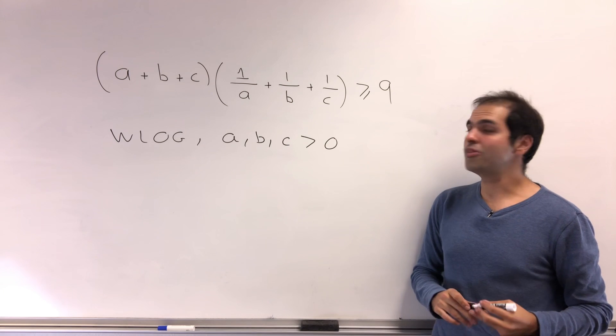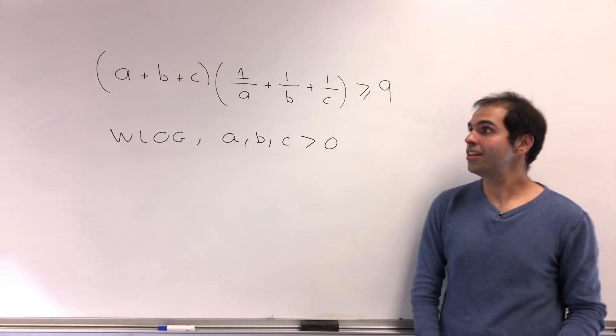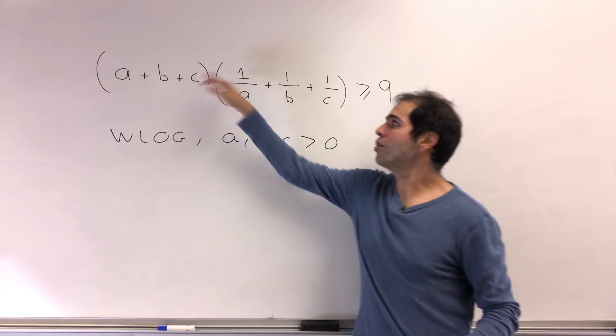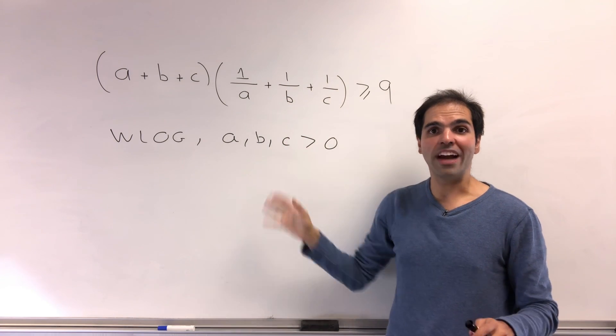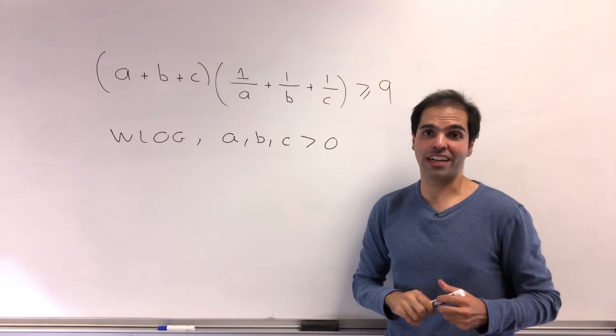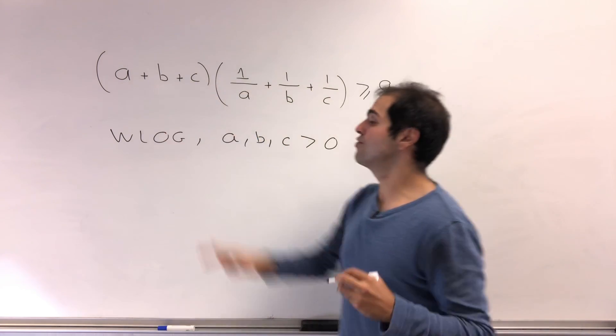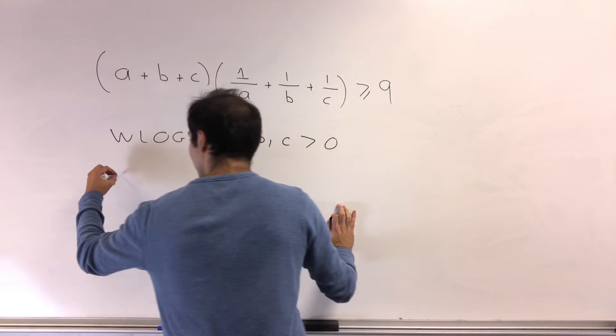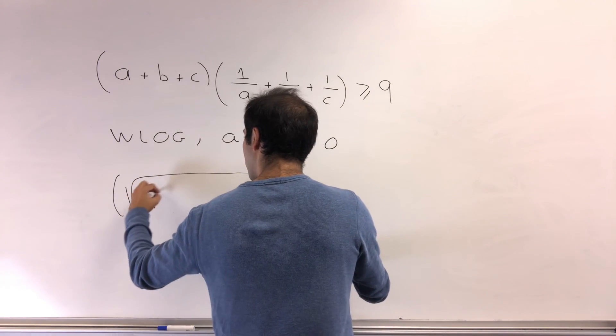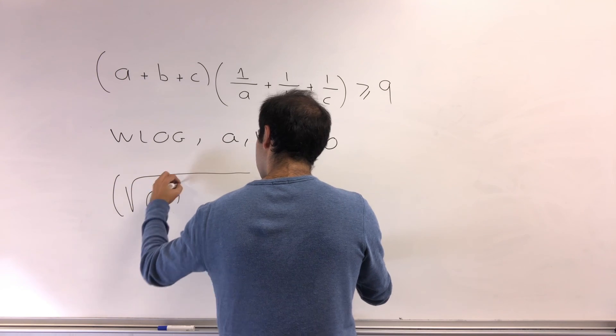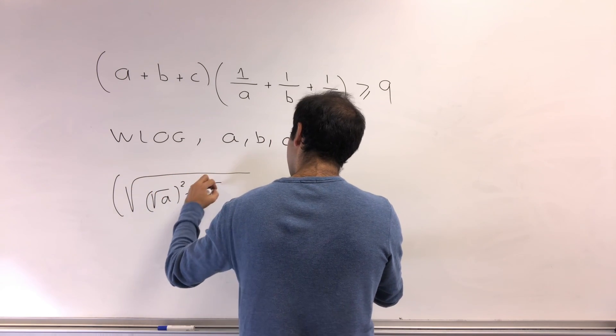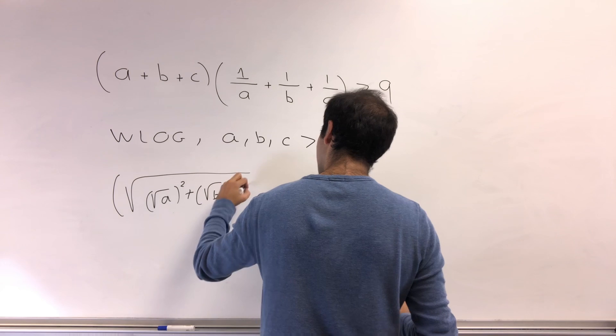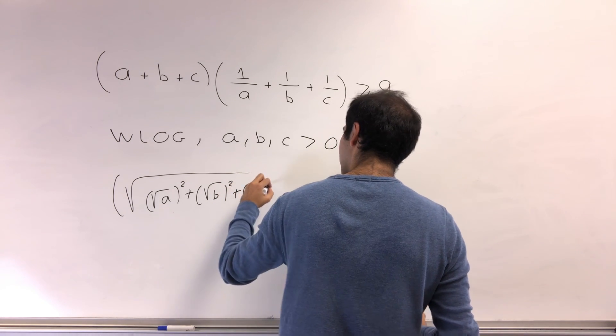Now here's how to solve the problem, and it's quite beautiful, because it turns out both those quantities, we can write this in terms of length of vectors. Because what this first quantity is, is just (√(a²) + √(b²) + √(c²))². And you square everything.